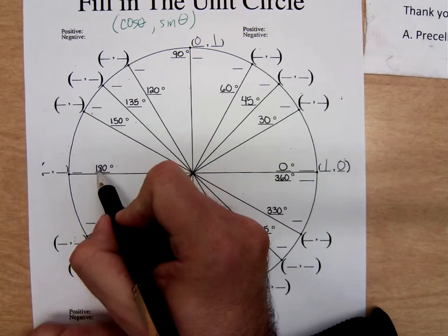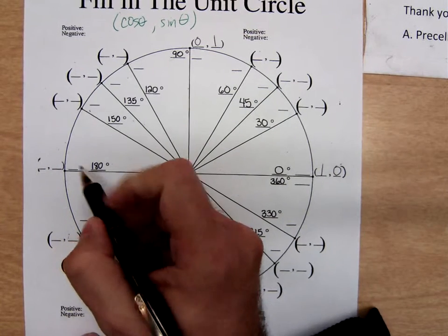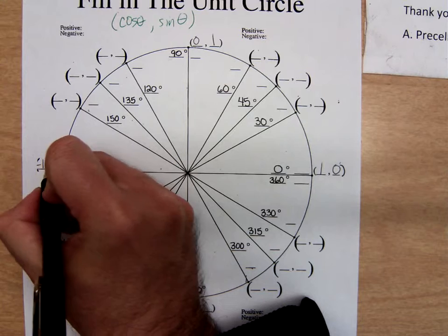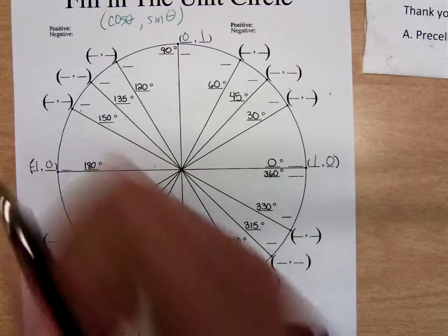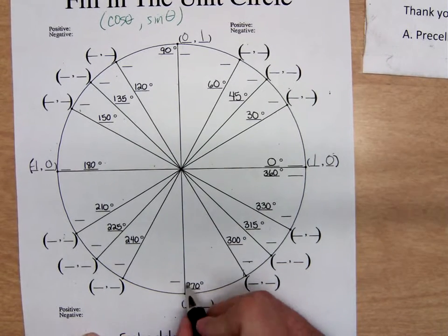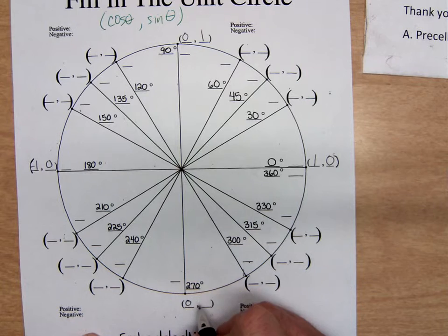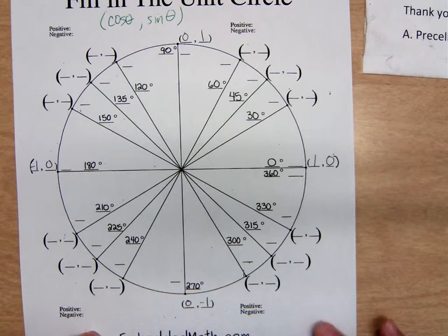At 180 degrees, negative one, comma zero. And at 270 is zero, negative one.